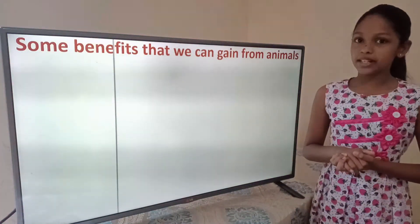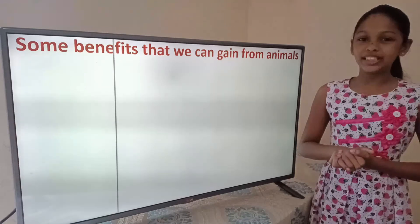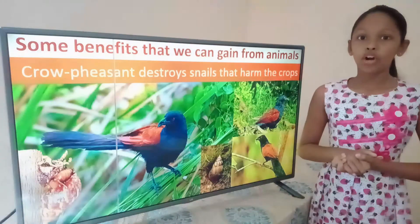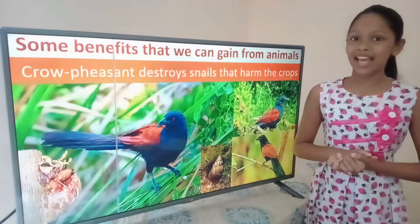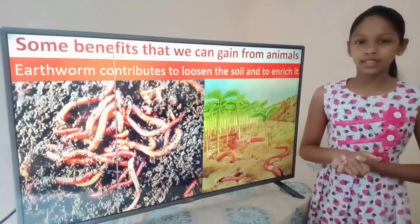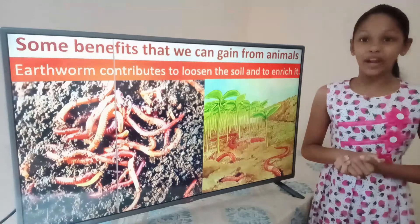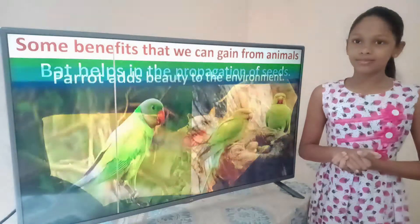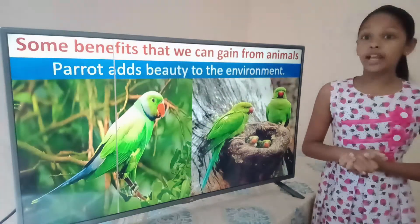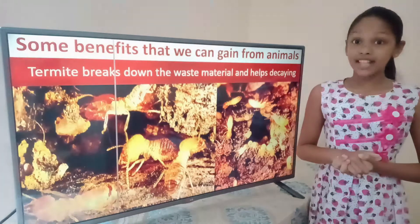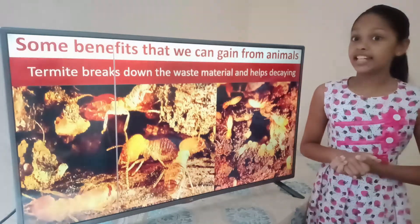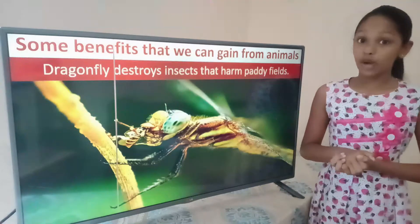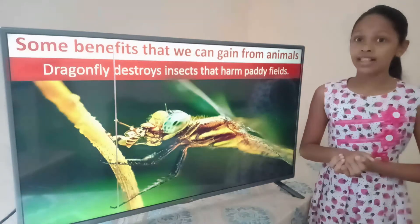Animal community is very important for the existence of man. Here are some benefits that we gain from animals: the frogicent destroys snails that harm crops; earthworm contributes to loosen and enrich the soil; birds help in the propagation of seeds; parrots add beauty to the environment; termites break down waste materials and help decaying; crows eat waste materials; and dragonflies destroy insects that harm paddy fields.